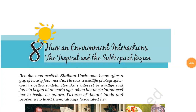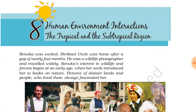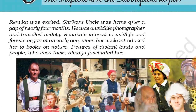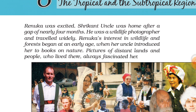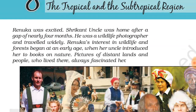Hello everyone. Today we will study NCERT Class 7th Geography Chapter 8: Human Environment Interactions - The Tropical and the Subtropical Region. There is a child named Renuka whose uncle Shreekan has come home after a long time, almost 4 months. He is a wildlife photographer who travels the whole world. Renuka has a lot of interest in different people and different places.